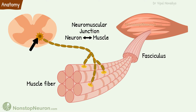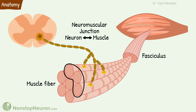The cell body of this neuron is located in the ventral horn of the spinal cord. Near the muscle, the axon branches extensively. Then each axon process innervates a separate muscle fiber. The whole assembly of the muscle fibers innervated by the axon from one motor neuron is called a motor unit.